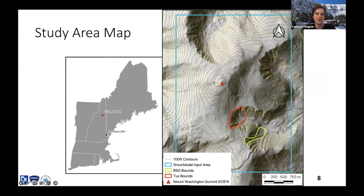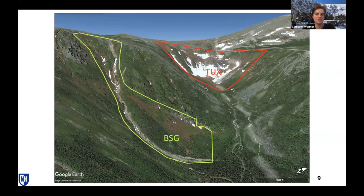Here's a map I generated showing two study areas on the summit cone and eastern sides of Mount Washington with 100-foot contours. The red outline is Tuckerman Ravine, and the other area is BSG — the Bootspur Gullies region — consisting of Hillman's and the lower snowfield. The large box is the snow model input area. Tuckerman Ravine has a predominantly eastern aspect with a little south-southeast and northeast mixed in, and Bootspur Gullies has a similar aspect as well.